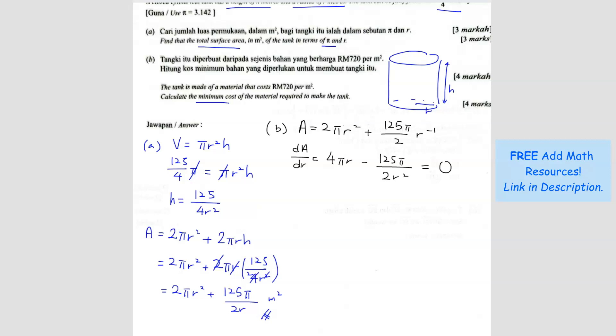Now we want to simplify this. We can take the whole equation and multiply by r squared, so we remove the r squared in the denominator. Now we have 4 pi r cubed minus 125 pi over 2 equals 0. Rearranging, 4 pi r cubed equals 125 pi over 2. We can simplify this by canceling pi, so r cubed equals...